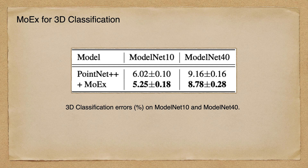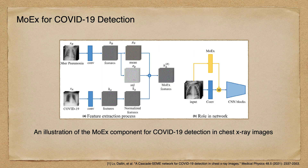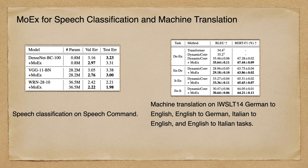Beyond image classification, MOX also works for 3D classification. Recently, MOX has been used as a main component for a COVID-19 detection network design and shows a clear advantage over other networks. Last but not least, MOX is lightweight and not restricted to computer vision — it could be used with different normalization methods. Here we show MOX could also help boost performance on speech recognition and machine translation in comparison with highly competitive baselines.